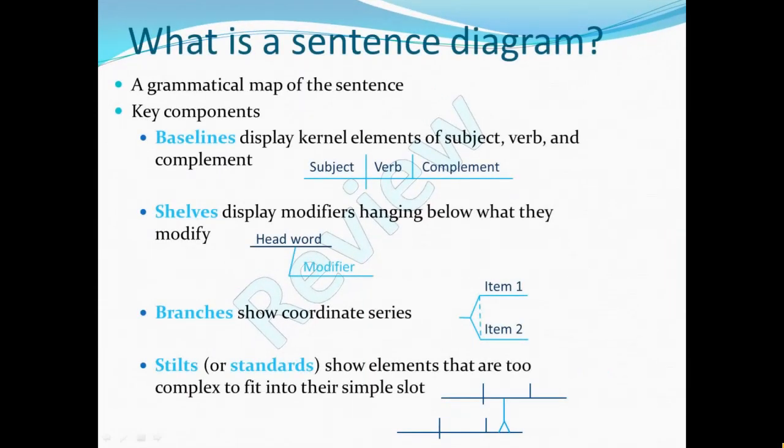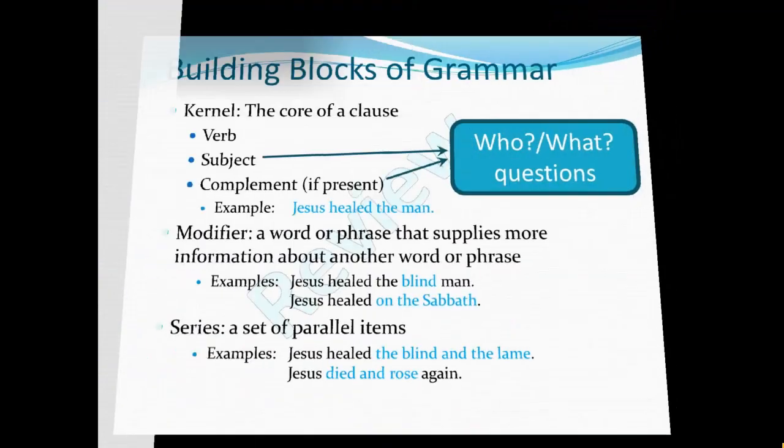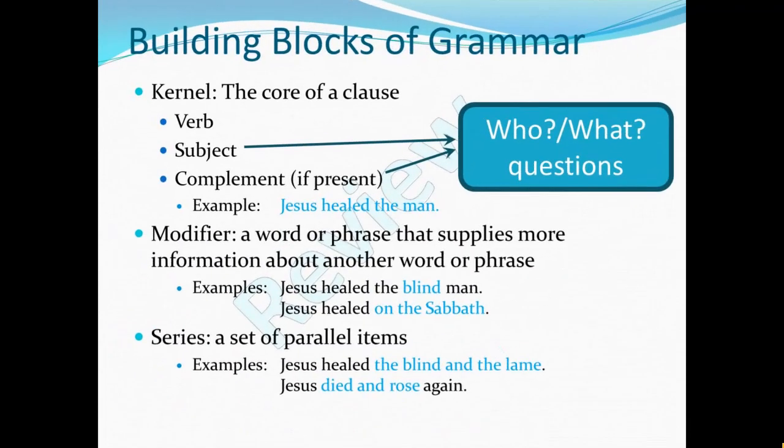A sentence diagram is a grammatical map of the sentence. Its key components are baselines, shelves, branches, stilts, or standards. In this video, we'll give some attention to branches for the first time. To be a competent diagrammer, you have to be a competent grammarian. So here are the building blocks of grammar.